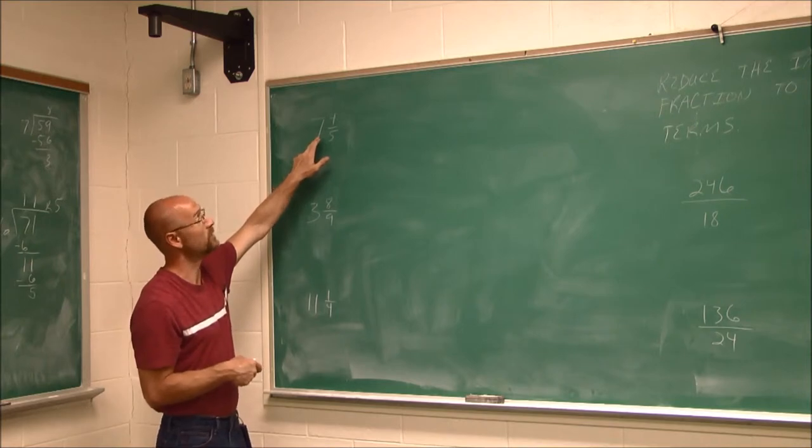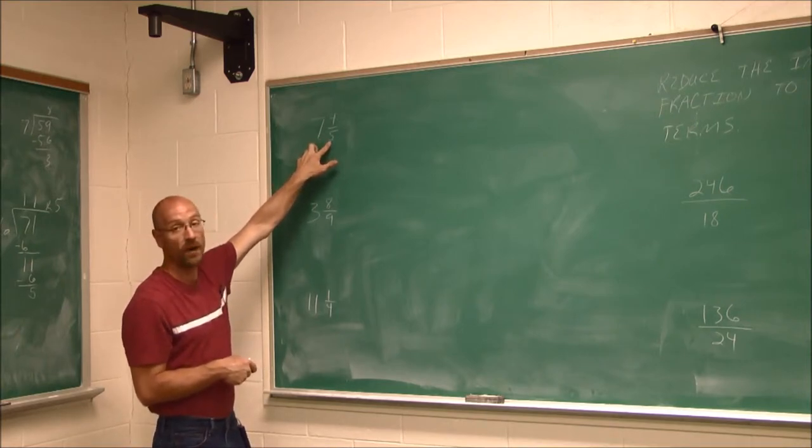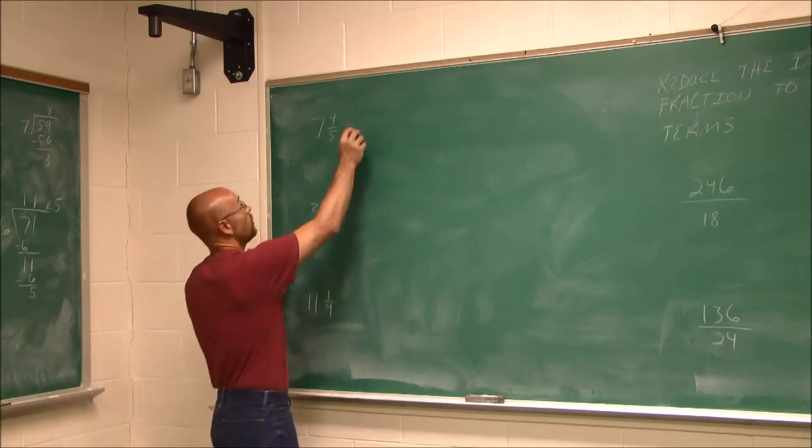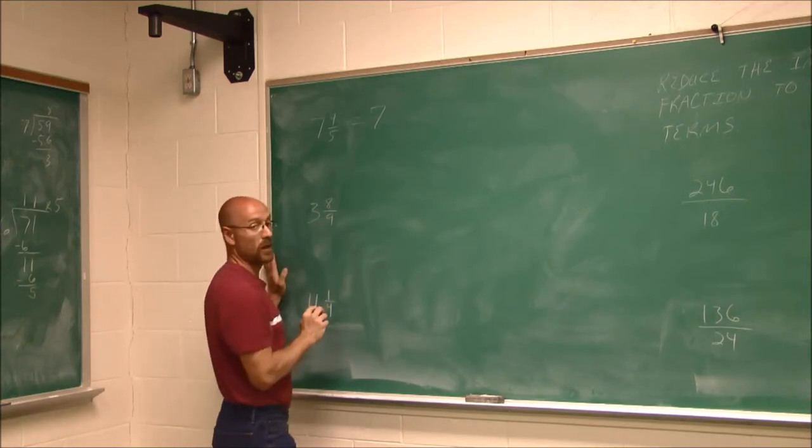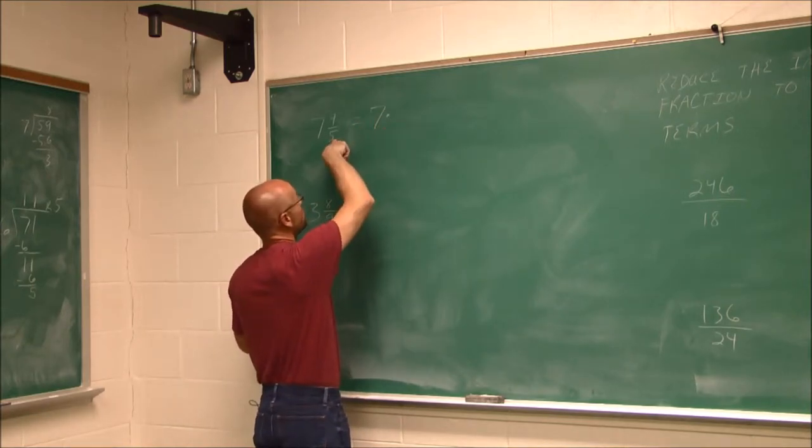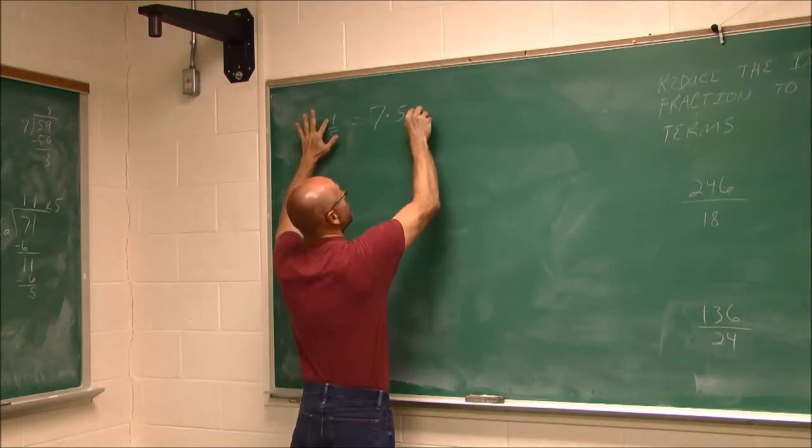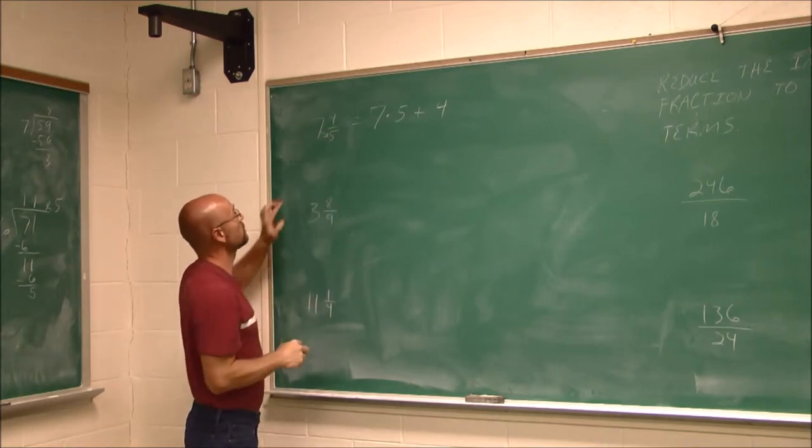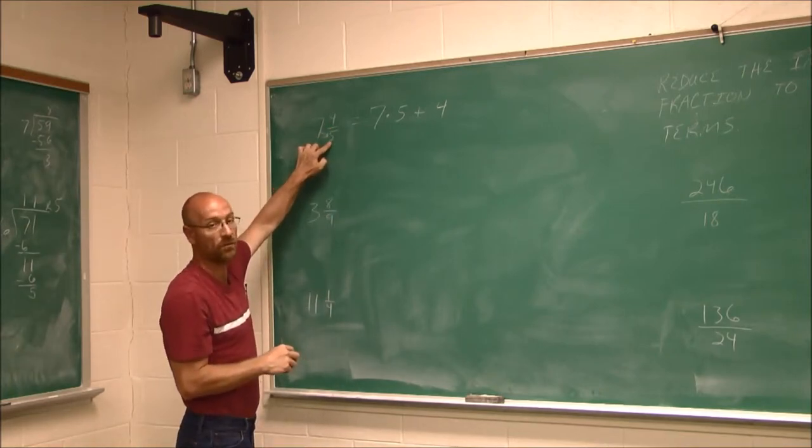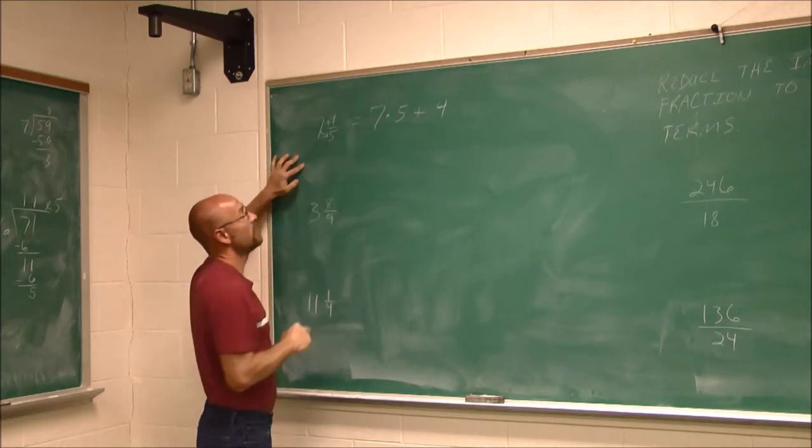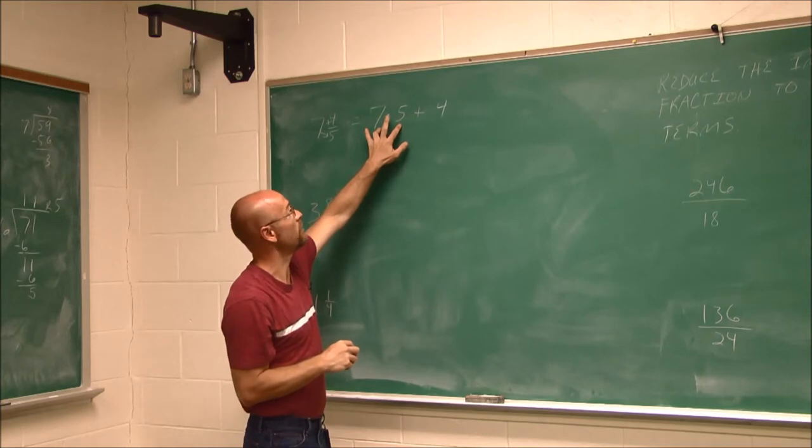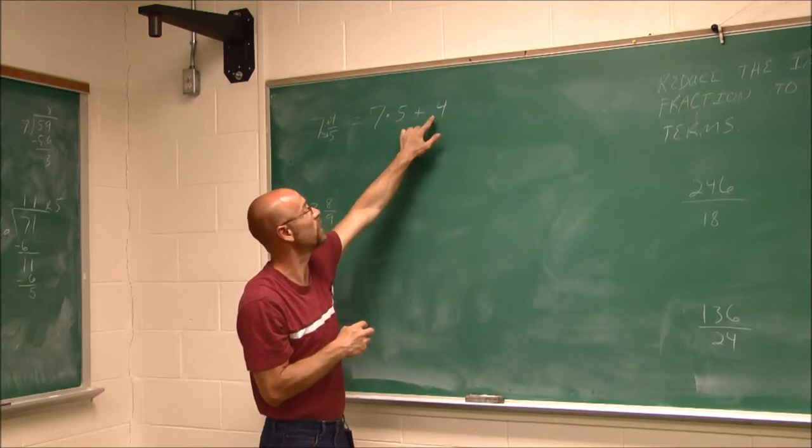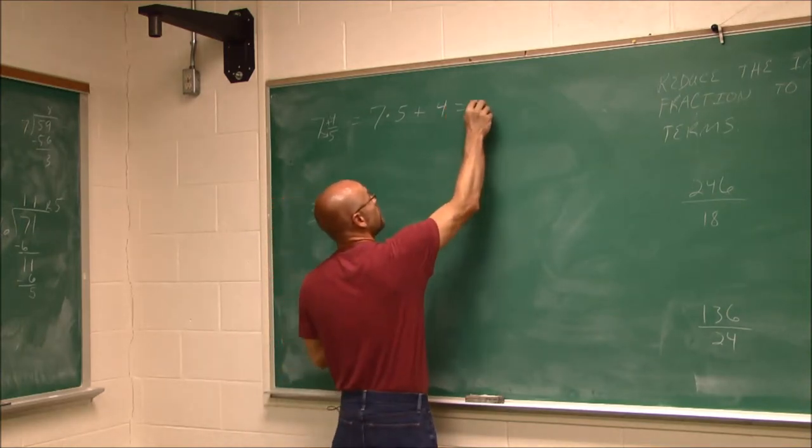We're going to multiply the 7, which was our quotient, times the divisor, and add it to the remainder. So one way to rewrite this is to take the whole number times the divisor and add the remainder. And one way to do it with an illustration is we're going to say 7 times 5, and then add the 4. So 7 times 5 is 35. And using order of operations, we would do multiplication before addition. 35 plus 4 is 39.